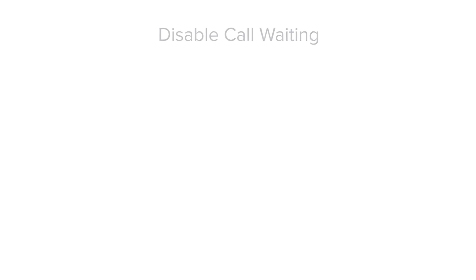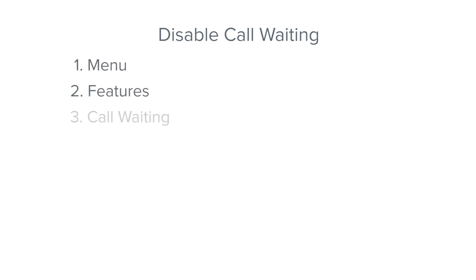If you are going to enable call forwarding with the Busy option, call waiting must be disabled first. This can be done by pressing Menu, Features, and then Call Waiting. Again, this step is only required if you are choosing the Busy option.